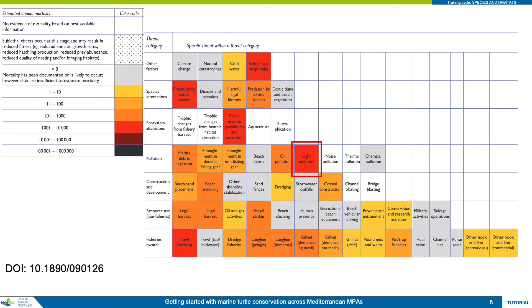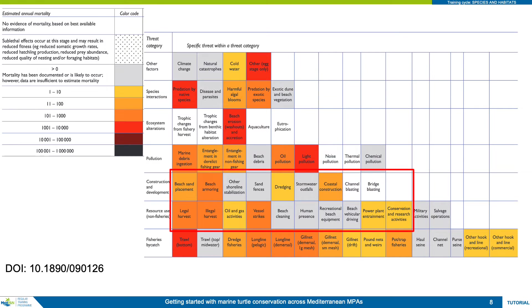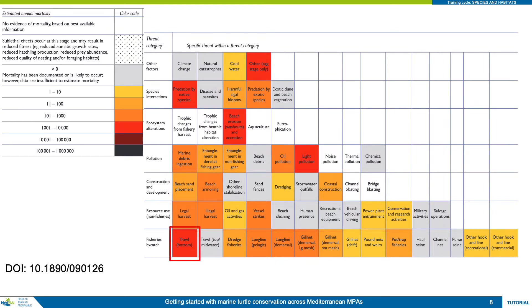For pollution, it is the terrestrial part of the turtle life cycle that is most impacted, specifically with light pollution causing havoc for hatchling orientation and survival. Development and construction are shown to have wide-ranging impacts, but none are classified in the highest score categories, and this is similar for non-fisheries resource use threats. Lastly, fisheries bycatch with bottom trawling is the standout worst threat in a long list of potential threats.